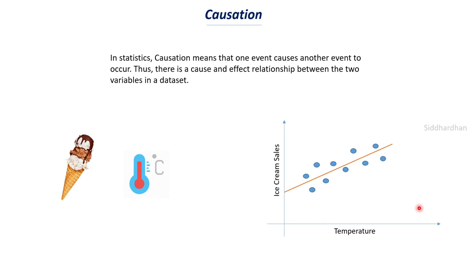If average temperature increases, people tend to buy more ice creams — the inference is that higher temperature causes more ice cream sales. There is a clear cause-and-effect pair: summer season causes more ice cream sales. Since there is a clear causal relationship, we can say there is causation. This is the difference between correlation and causation: correlation says two variables are related, whereas causation says one event causes the other event to occur.